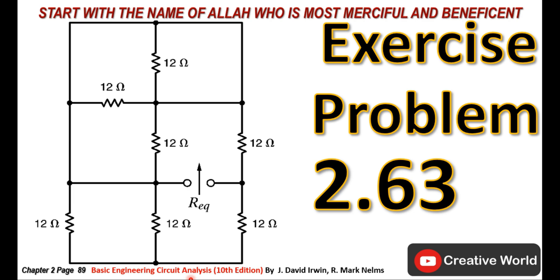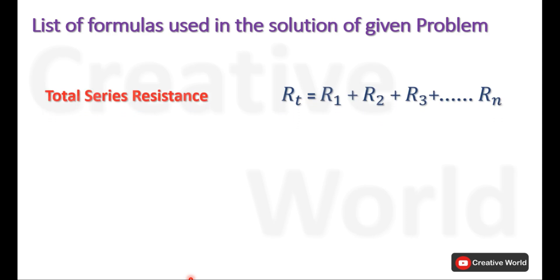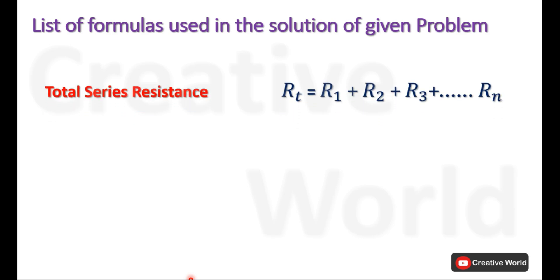While solving this problem we will be using the total series resistance calculation formula. R equivalent of a series connection is calculated by taking the sum of all resistances connected in series.